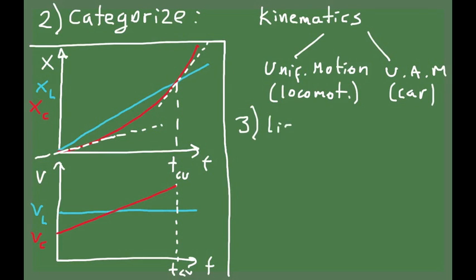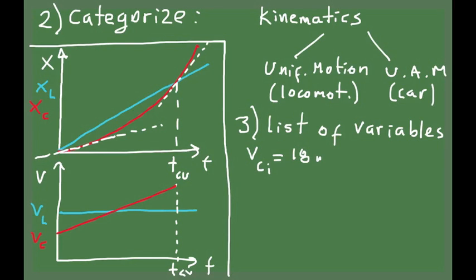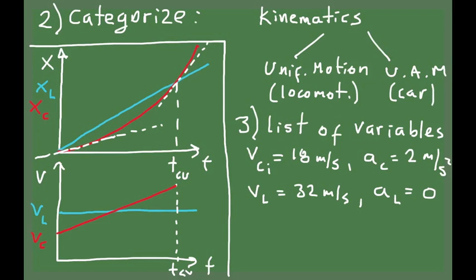Once you have categorized the problem, it is a good idea to make a list of the variables — to list all the information given in the problem. What we have been given is that the car has an initial velocity of 18 meters per second and an acceleration of 2 meters per second squared, and that the locomotive has a constant velocity of 32 meters per second, which means the acceleration of the locomotive is zero.